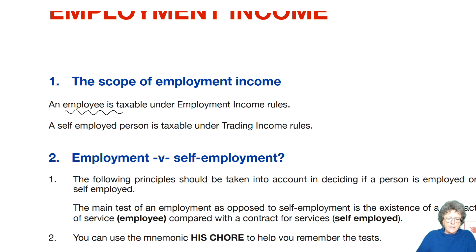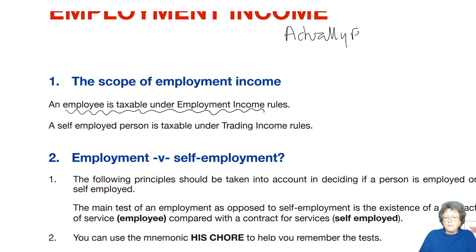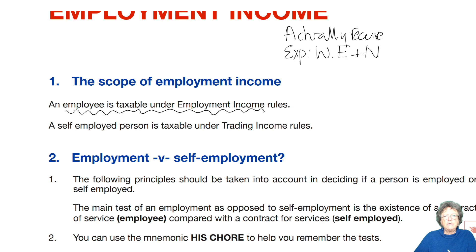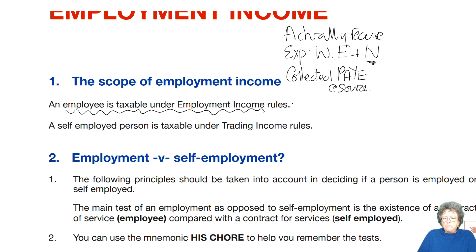An employee is taxed under employment laws. If you are employed, you are taxed on what you actually receive. Your expenses are difficult to claim — they have to be wholly, exclusively, and necessarily incurred. The tax is collected through Pay As You Earn and deducted at source, monthly or weekly. And you pay Class 1 NIC.